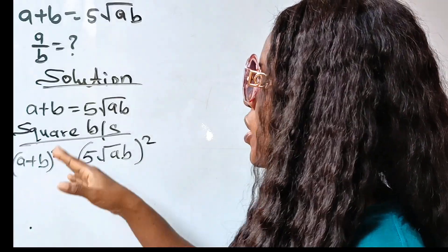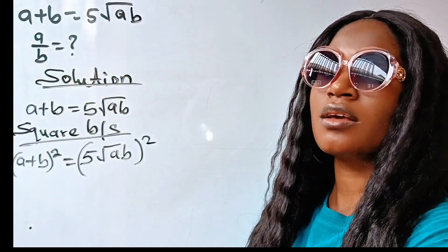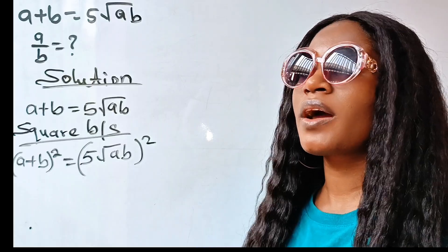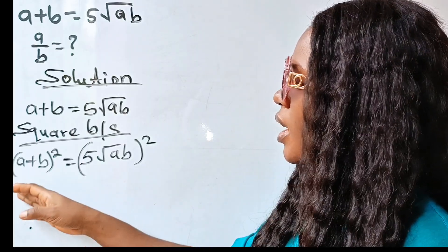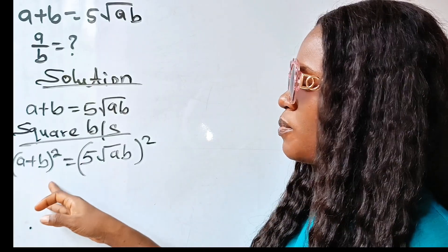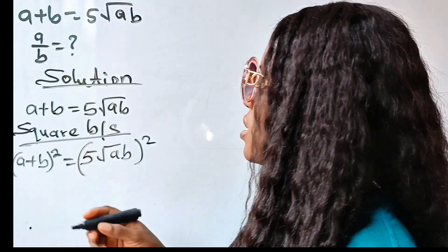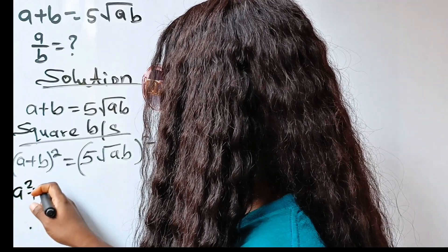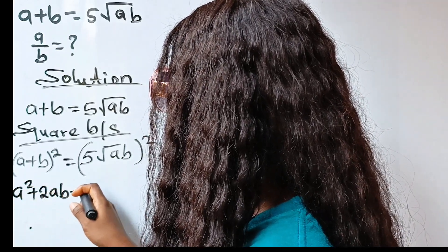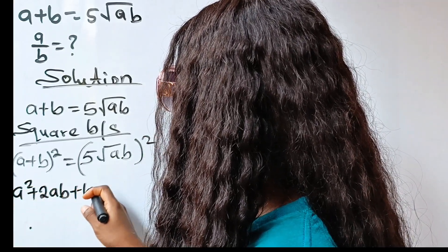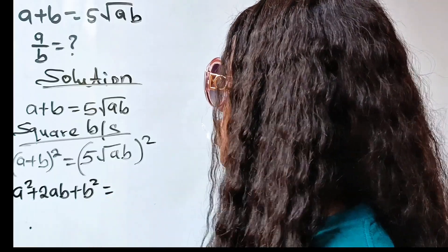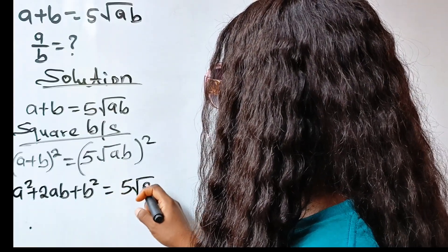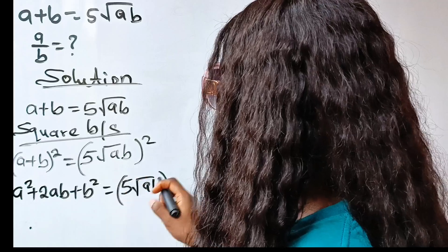Now, A plus B all squared is an algebraic identity. This identity states that A plus B all squared is equal to A squared plus 2AB plus B squared, and this equals 5 root AB squared.